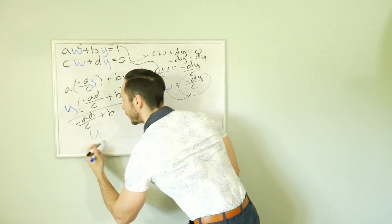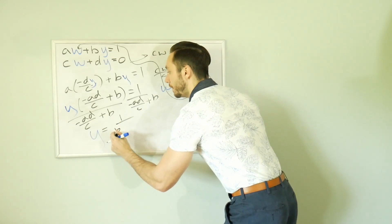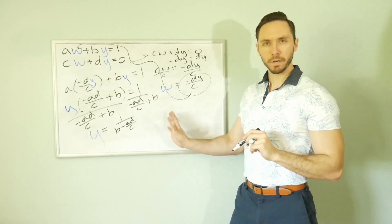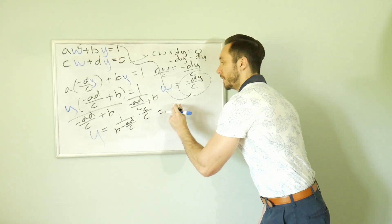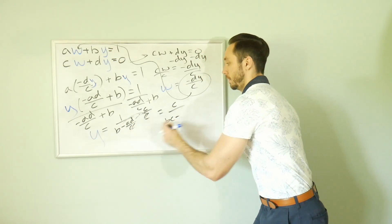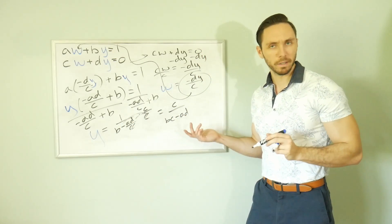Divide negative AD over C plus B. Y is equal to 1 over B minus AD over C. So we're multiplying by C over C. Multiply by C over C. C over BC minus AD.